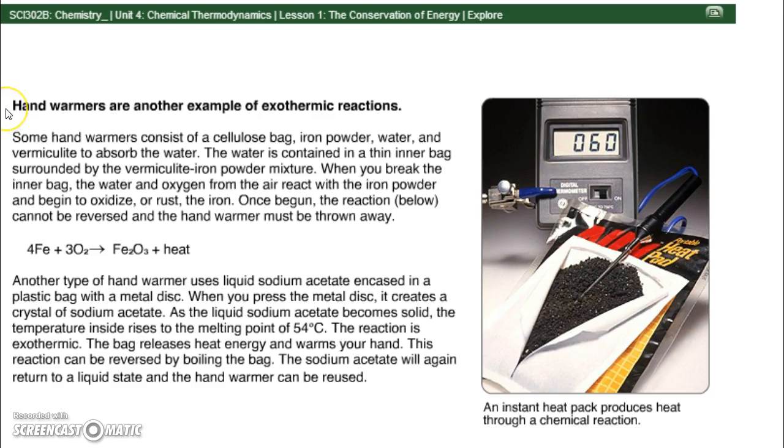And have you ever gone hunting and used hand warmers? If so, that's another exothermic reaction. Some hand warmers consist of a cellulose bag, iron powder, water, and vermiculite to absorb the water. The water is contained in a thin inner bag surrounded by the vermiculite iron powder mixture. When you break the inner bag, the water and oxygen from the air react with the iron powder and begin to oxidize or rust the iron. Once began, the reaction cannot be reversed and the hand warmer must be thrown away.